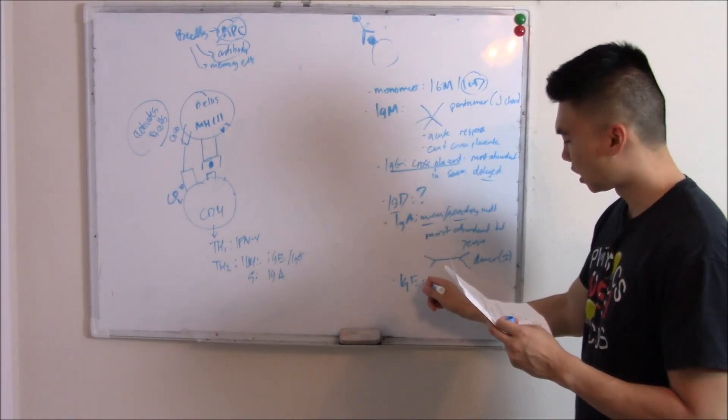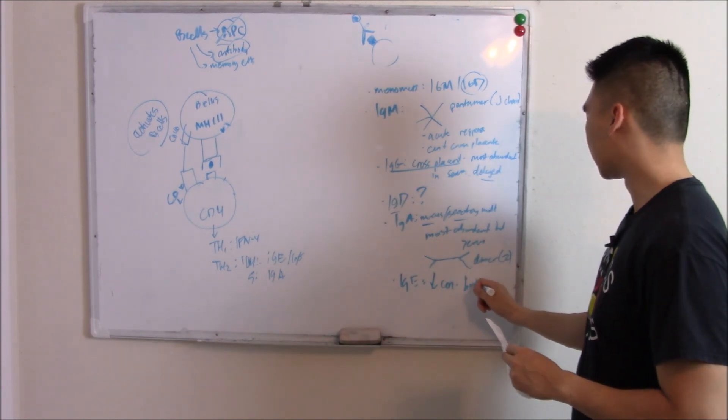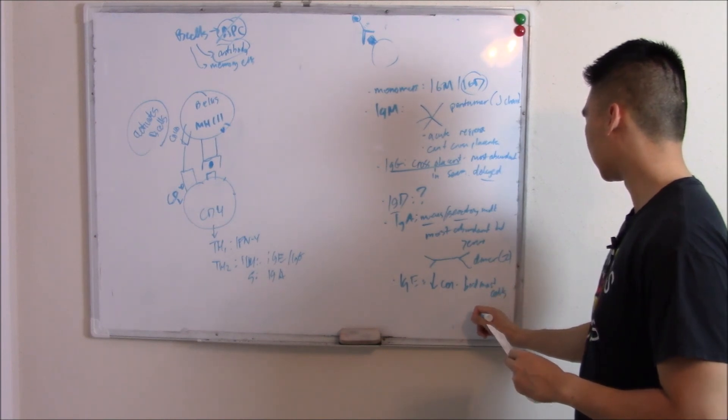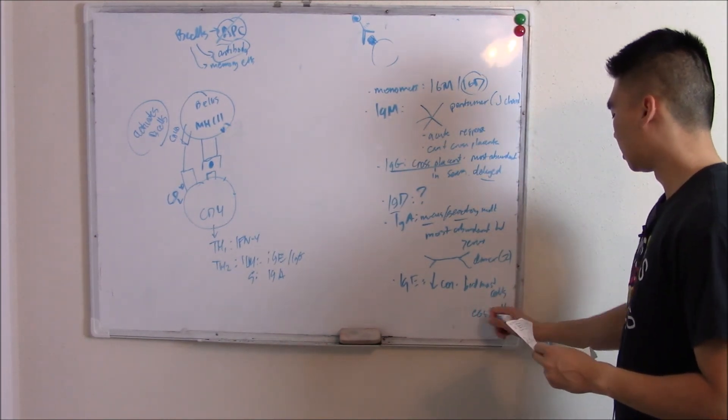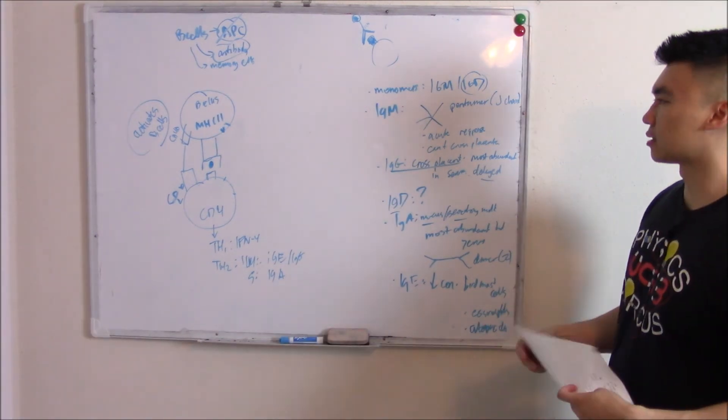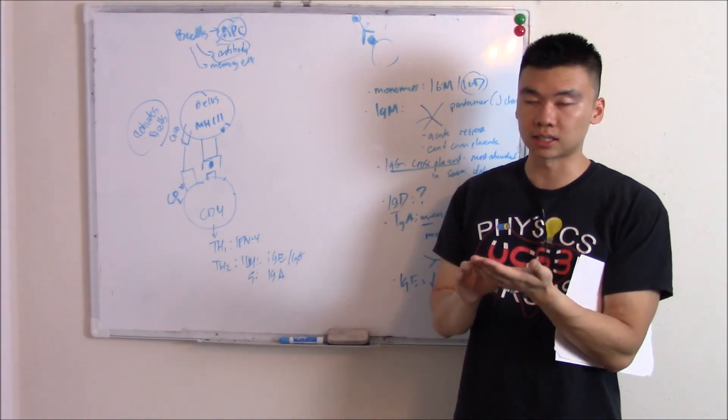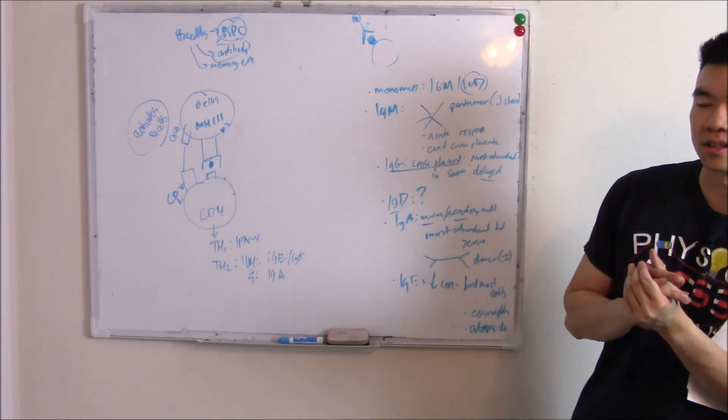And then last but not least, IgE. Lowest concentration. It binds mast cells and activates eosinophils. So it's very important for parasites and for atopic diseases. So it can bind mast cells, you can cross-link with other mast cells and cause them to release histamine. And you can get a lot of signs that you see in atopic disease. We'll talk about that in our next video.